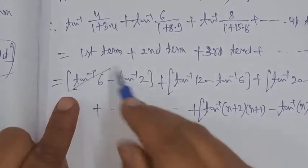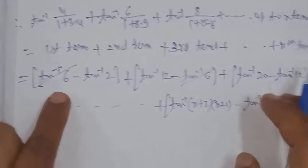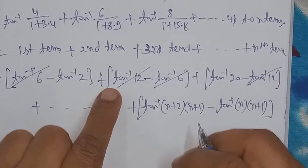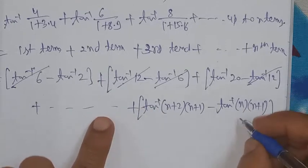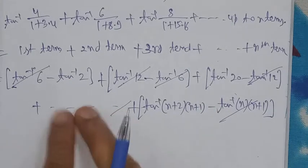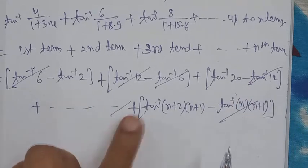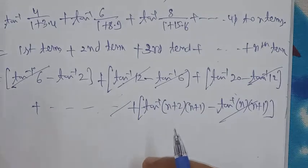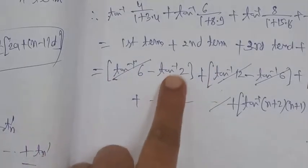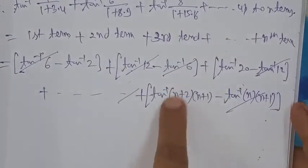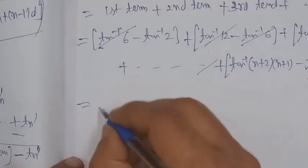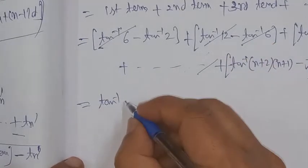Continuing: third term is tan⁻¹20 - tan⁻¹12, and so on, with the last (nth) term being tan⁻¹((n+2)(n+1)) - tan⁻¹(n(n+1)). By telescoping cancellation, the first part of each term cancels with the second part of the next term. We are left with the last first-part minus the very first second-part.